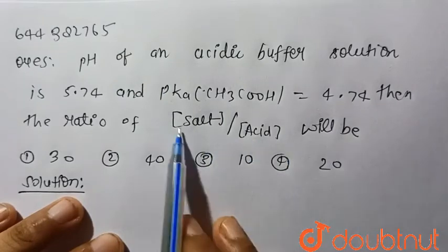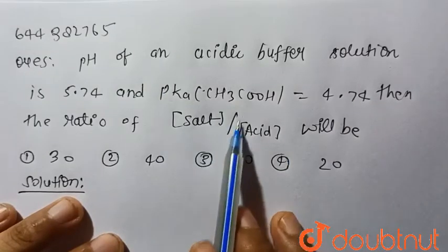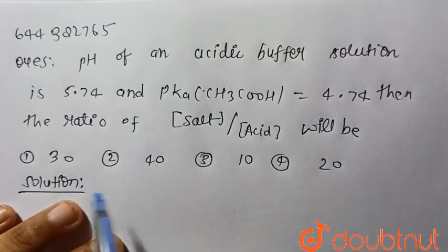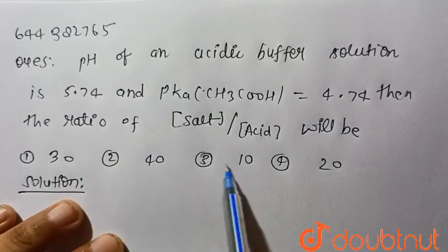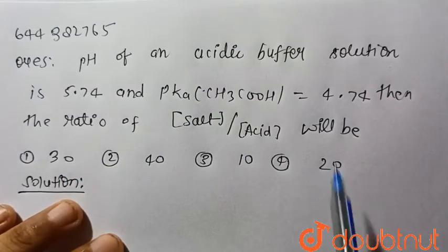Then the ratio of salt upon acid, that is the concentration of salt upon concentration of acid, will be? Four options are given: first one is 30, second is 40, third is 10, and fourth is 20.